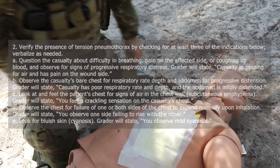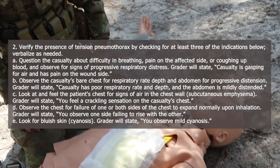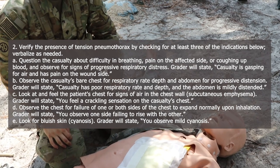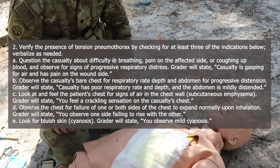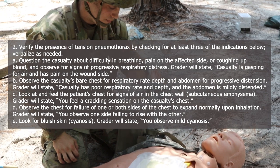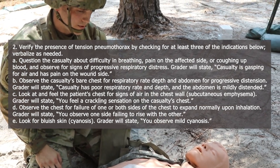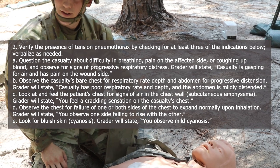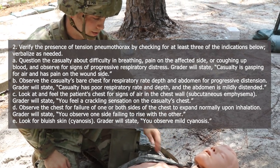Next, verify the presence of tension pneumothorax by checking for at least three of the four indications below. Verbalize as needed. Step 1: question the casualty about difficulty breathing, pain on the affected side, or coughing up blood, and observe signs of progressive respiratory distress. Verbalize: breathing, pain on the affected side, or coughing up blood.